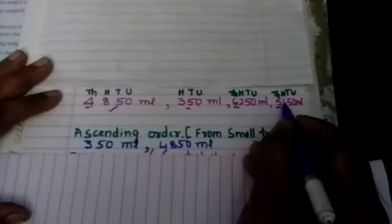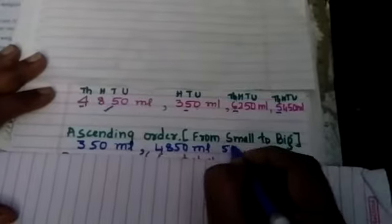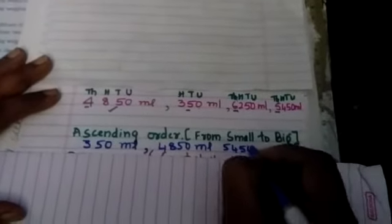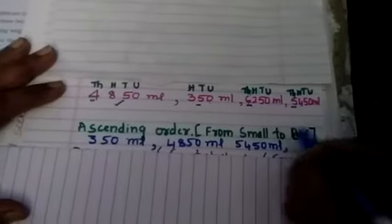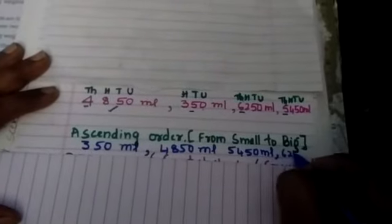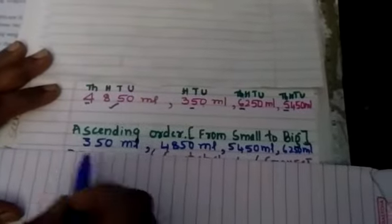Then afterwards in between these two, six, five, which is smaller? Five. So 5,450 milliliters, comma. The last remaining is 6,250 milliliters. Like this you have to do it. Understood?